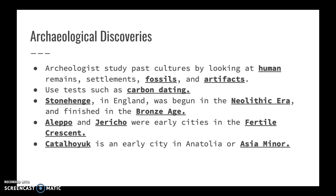Archaeologists study past cultures by looking at human remains, settlements, fossils, and artifacts. From those artifacts they're able to tell what daily life was like and understand more about those civilizations. They use tests like carbon dating to figure out how old certain objects are, which helps place them in history. A couple of monoliths you need to know are Stonehenge, Aleppo and Jericho, and Catalhöyük.